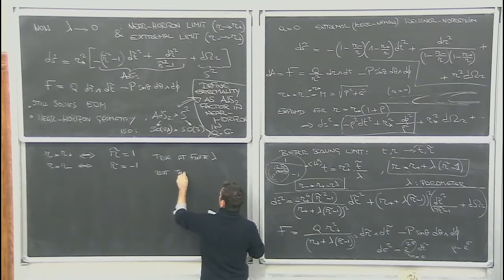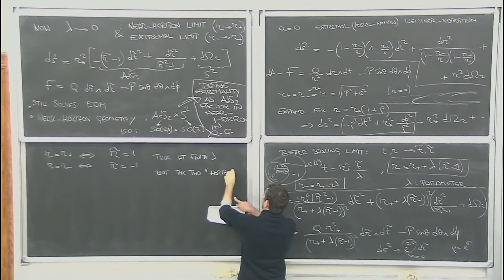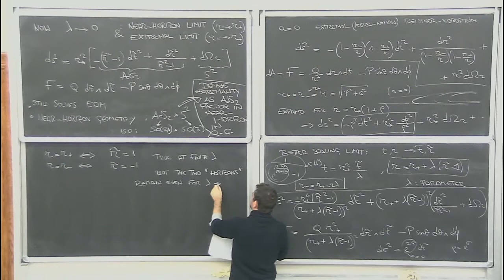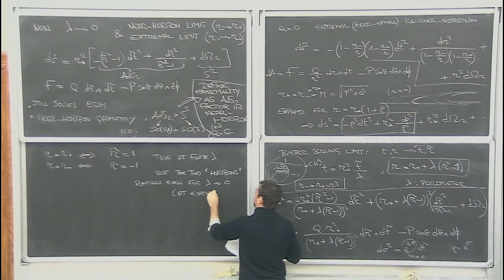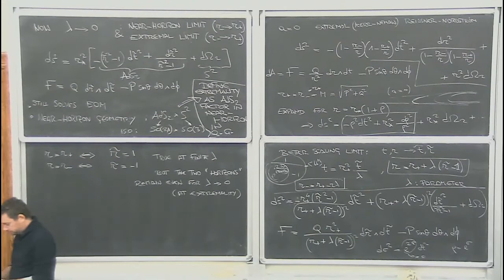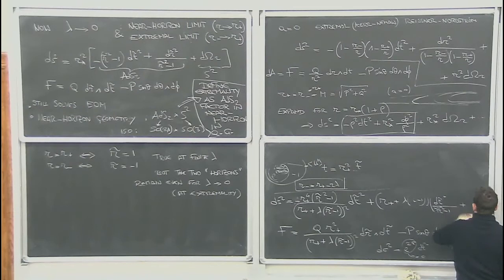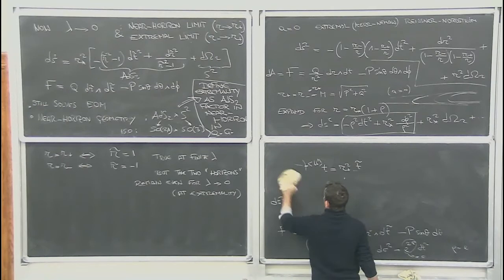True at finite lambda, but the two — let me call these horizons in this way — remain even for lambda equals zero, that is, at extremality. So now I can erase all this; we will just focus on this geometry and use it to define our entropy.